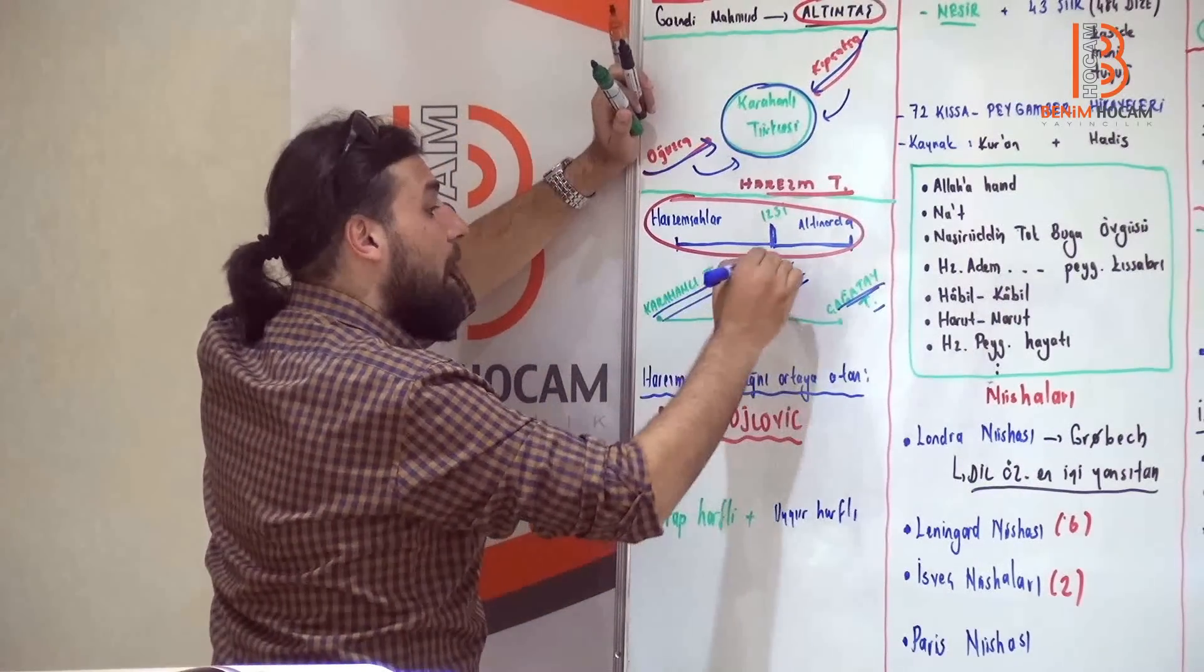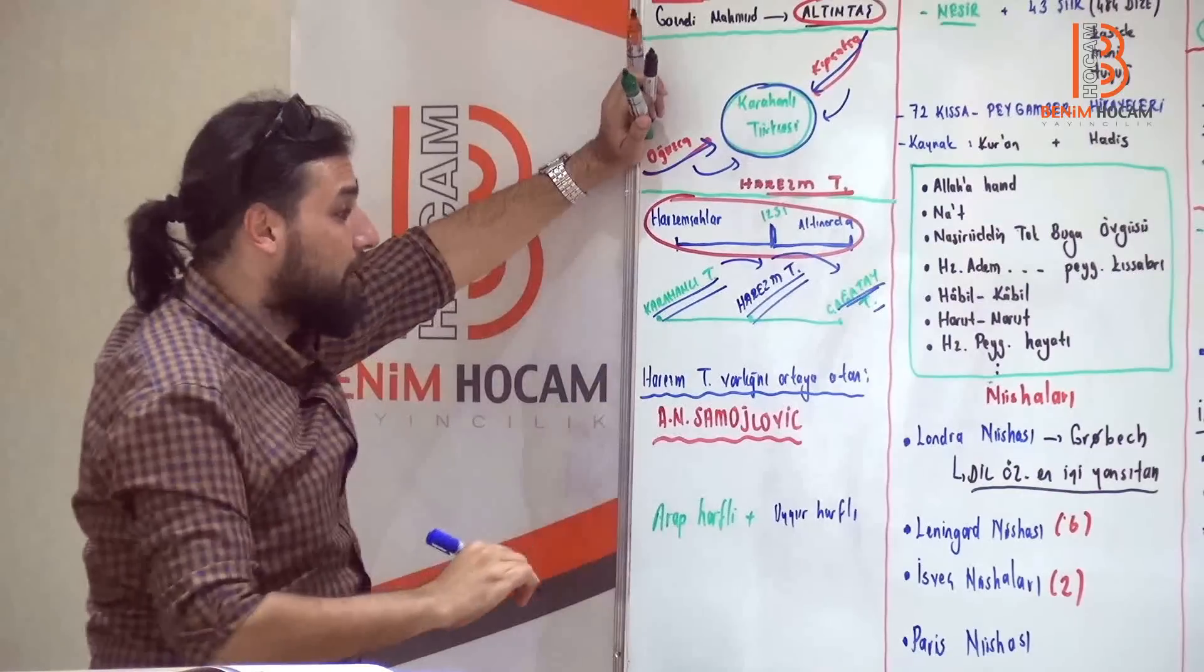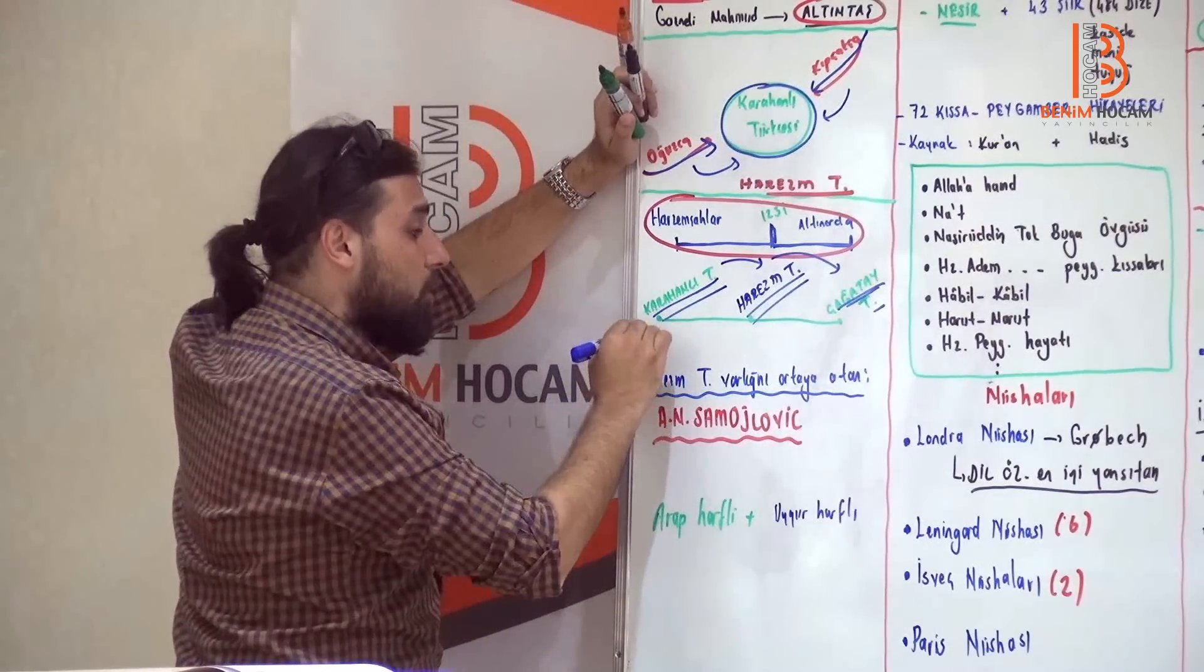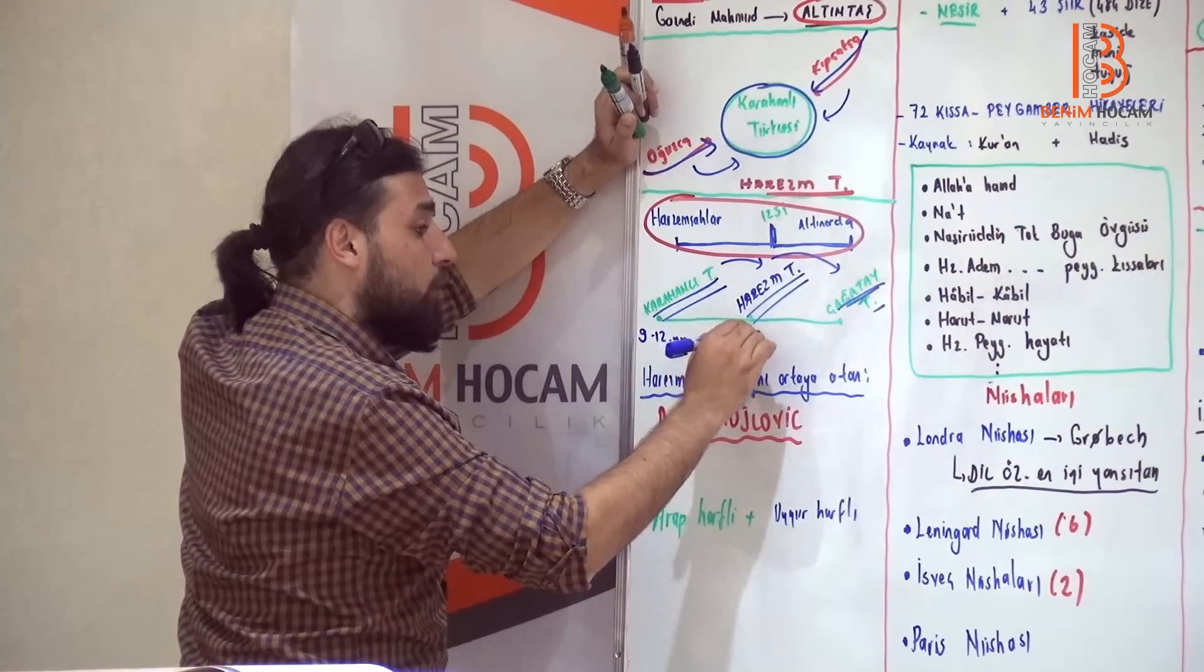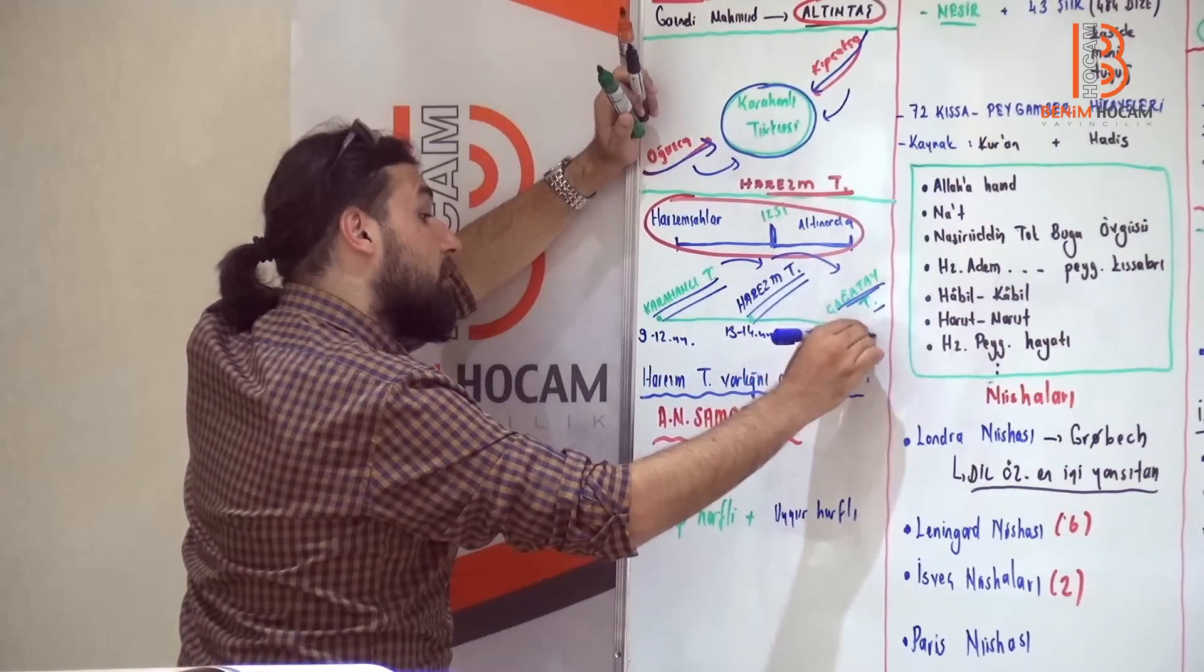Karahanlı Türkçesinden Çağatay Türkçesine bir geçiş evresidir. Yani Karahanlı Türkçesi, arkasından Harezm Türkçesi, arkasından da hangi Türkçe varmış arkadaşlar? Çağatay. Demek ki Karahanlı varmış, Harezm varmış, arkasında da Çağatay. Hatırlayın arkadaşlar. 9-12. yüzyıllar Karahanlı, 13-14. yüzyıllar Harezm, 15-16. yüzyıllarda Çağatay değil mi?